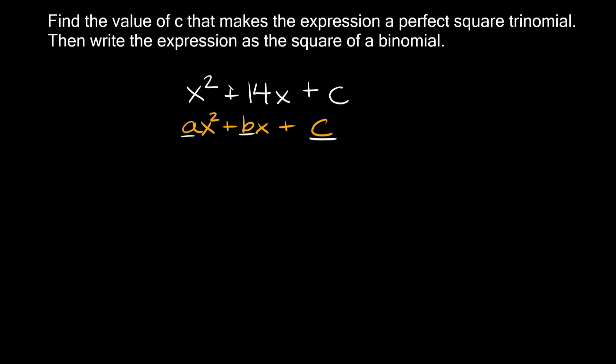Here x squared plus 14x plus c is already in standard form. In order to figure out what c is, we're going to plug in this little formula. So c is going to be equal to b over 2 squared. And where's this b coming from? Well it's basically just this coefficient right here that's next to the single x or single variable. So here this positive 14, make sure you include the sign, is our b.